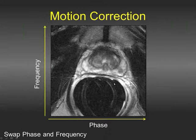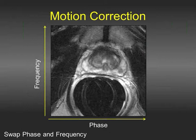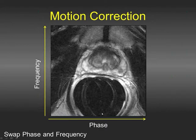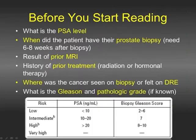Another important point is that some institutions use anti-peristaltic agents. We typically do not administer them because our scans are done without continuous physician monitoring — the fellows or attendings place the coil and the remainder is carried out by the technologist, so the added cost and time is an issue for us. However, if your institution can use them, anti-peristaltic agents do help in reducing motion artifact from peristalsis.